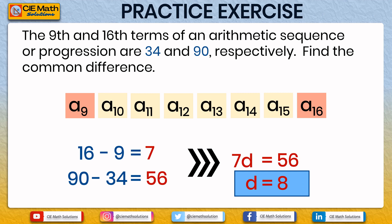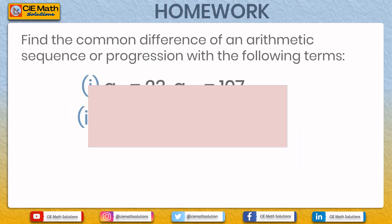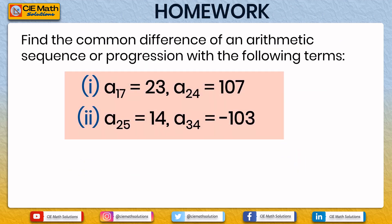If you got the answer correct, congratulations! You now know how to find the common difference given any two terms. For homework, find the common difference with the following: for (I), A17 equals 23 and A24 equals 107; for (II), A25 equals 14 and A34 equals negative 103. Type your answers in the comment section below and I will reply to verify them.